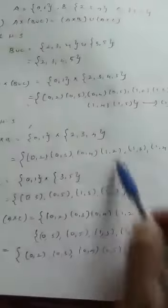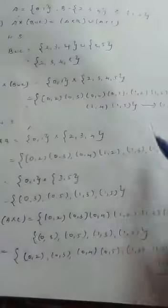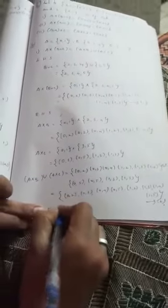See the equation 1: (0,2), (0,3), (0,4), (0,5), (1,2), (1,3), (1,4), (1,5). If you check from 1 and 2, LHS is equal to RHS. From 1 and 2, LHS is equal to RHS. It is proved.